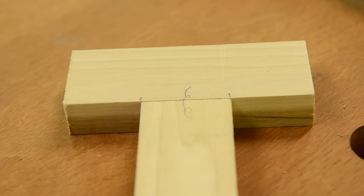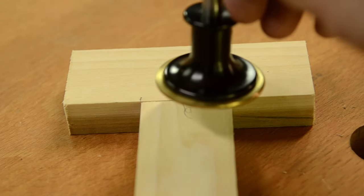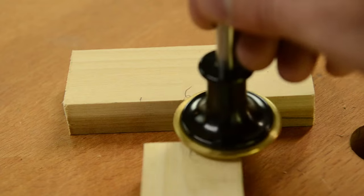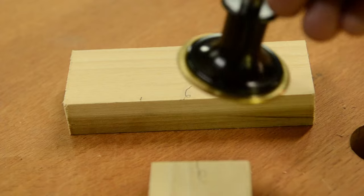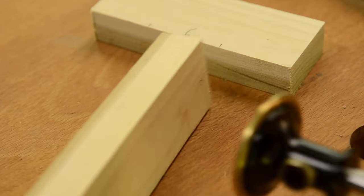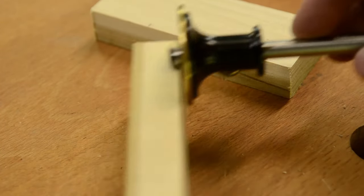Not every board has the same thickness, so make all your markings from the same reference face to ensure that the tenon will fit in the mortise. I like to mark my faces with some sort of squiggly mark so I don't lose track. This is how the marking gauge will look up against the reference face.